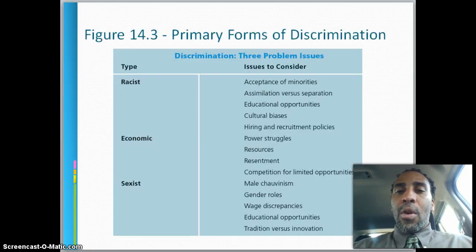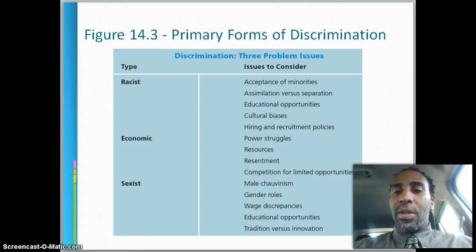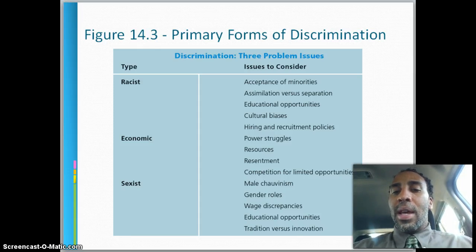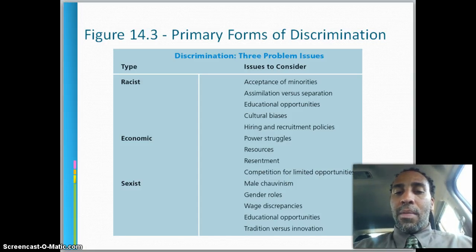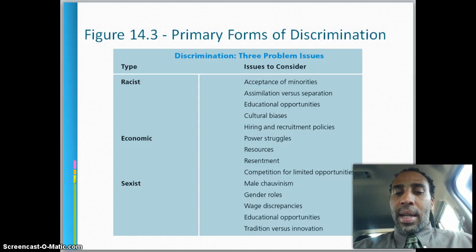Primary forms of discrimination include racism — issues to consider are acceptance of minorities, assimilation versus separation, educational opportunities, cultural biases, hiring and recruitment policies, economic power struggles, competition for limited opportunities, and male chauvinism. Sexist discrimination covers gender roles, wage discrepancies, educational opportunities, and tradition versus innovation.